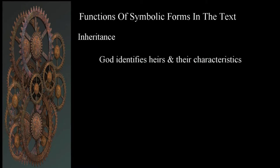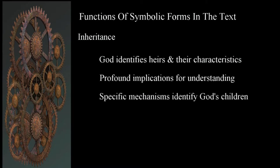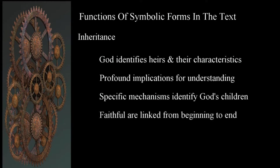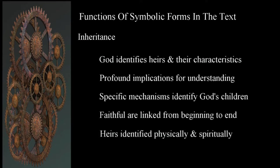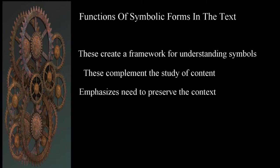Inheritance: God identifies the nature of inheritance and characteristics of heirs throughout the scriptures. Utilizing a common concept such as this, we can understand the implications when interpreting and studying the Bible. God uses specific mechanisms to identify his children. These mechanisms link the faithful together by their nature and underlying spiritual qualities. Those who will inherit the promises of God are characterized in ways that can be seen, both physically and symbolically. These are four things that will help us create a framework for understanding symbols in the Bible, complementing our study of content and further strengthening the idea of preserving the context of books, chapters, and verses.